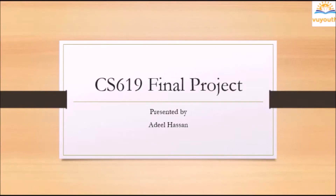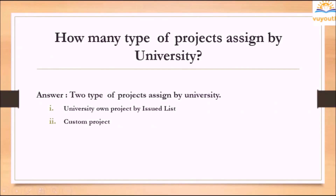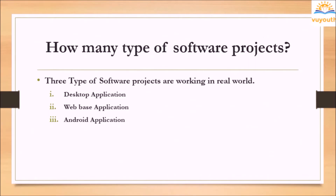CS 619 final project presented by Adil Hassam. How many types of projects are assigned by university? Answer: two types of projects assigned by university. One: university-owned project by issued list. Two: custom project.